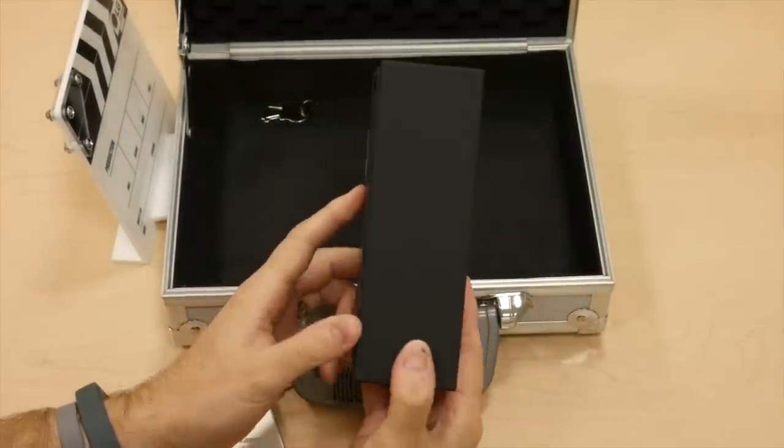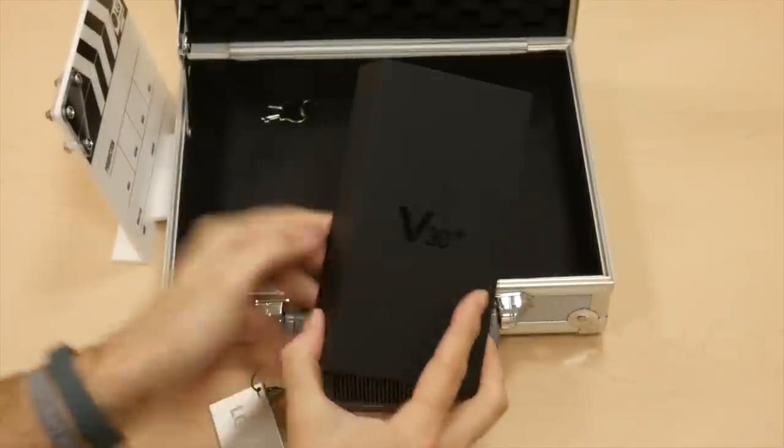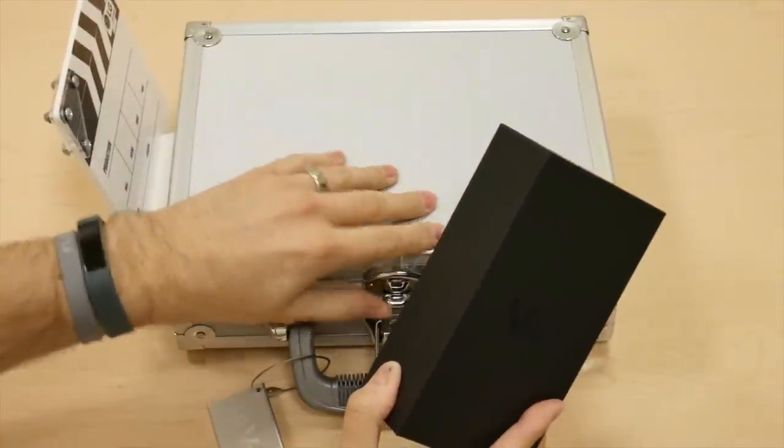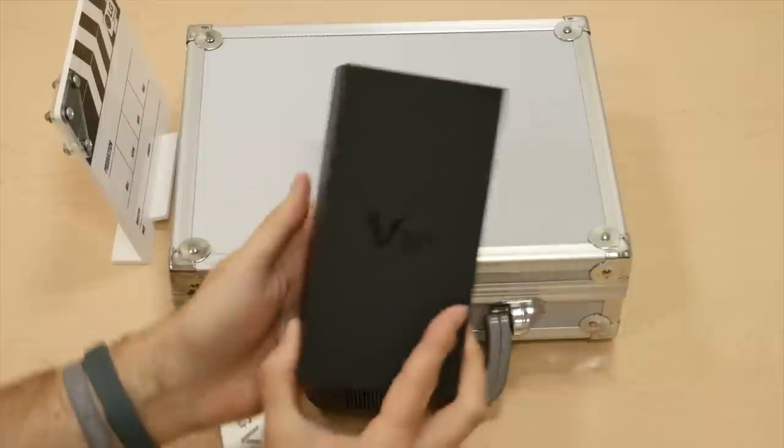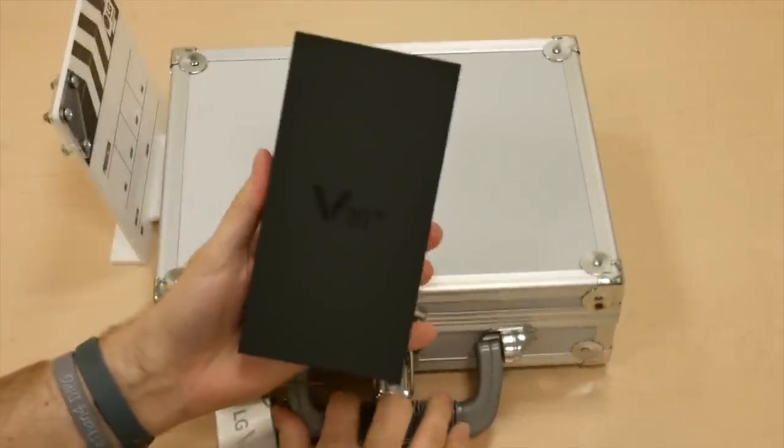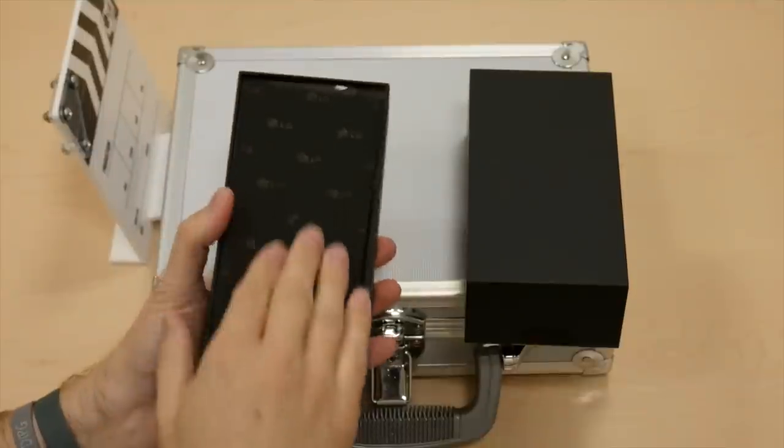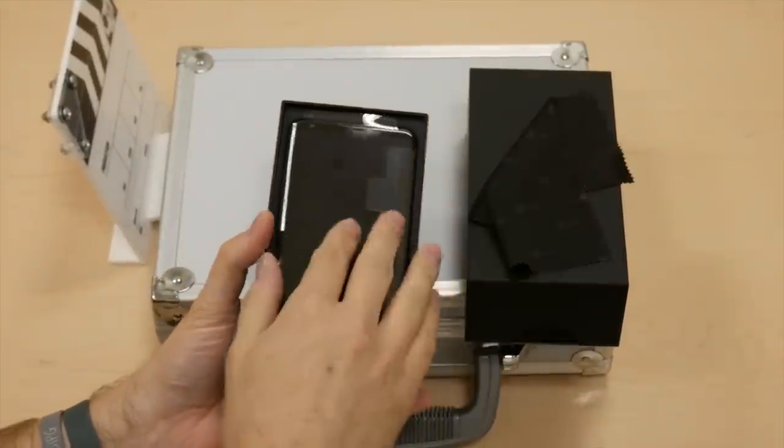And then of course the retail packaging of the V30 Plus. Nice soft-touch box, which is always appreciated. Let me go ahead and close this guy up. Let's get down to brass tacks. Let's get the box open here. Got a nice little microfiber cleaning cloth there.